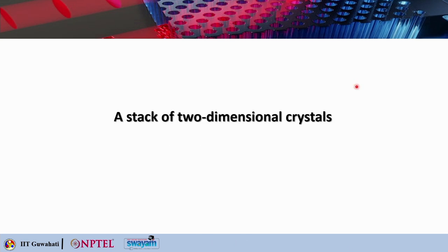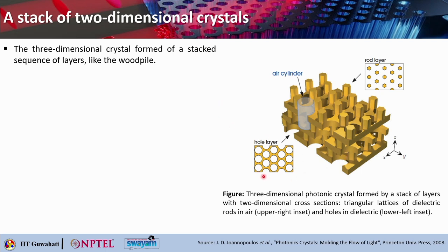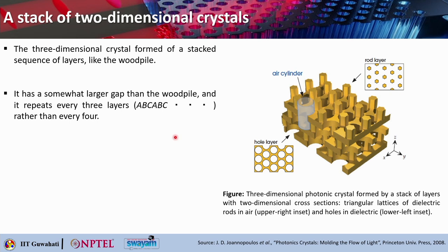The next structure is a stack of two-dimensional crystals. You can think of a two-dimensional crystal that gives a beautiful bandgap and then make a stack of that, something like the wood pile. Here is a three-dimensional photonic crystal formed by a stack of layers with two-dimensional cross sections — a triangular lattice of dielectric rods in air, with holes also forming a triangular lattice. This structure has a somewhat larger gap than the wood pile and repeats every three layers in an A, B, C, A, B, C stacking.